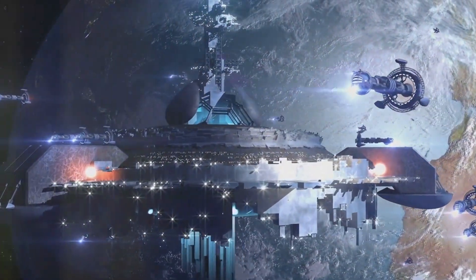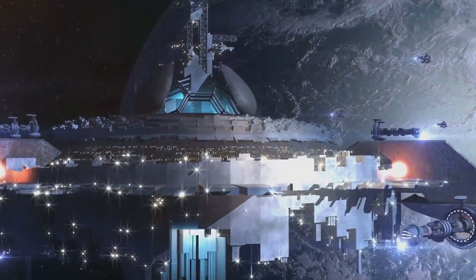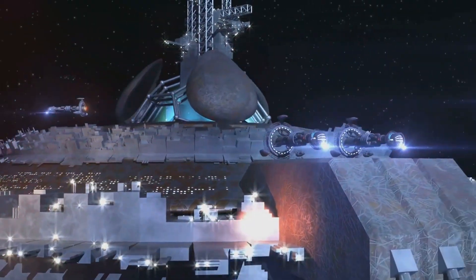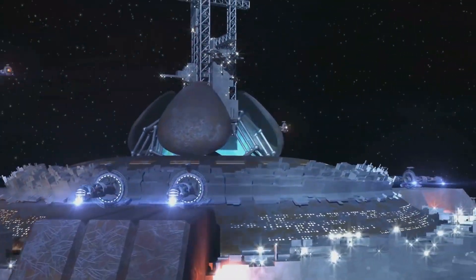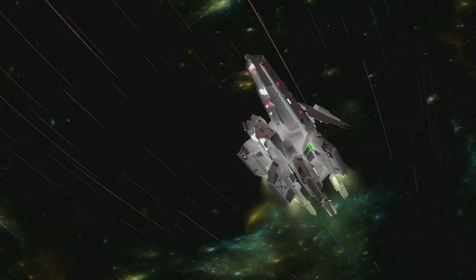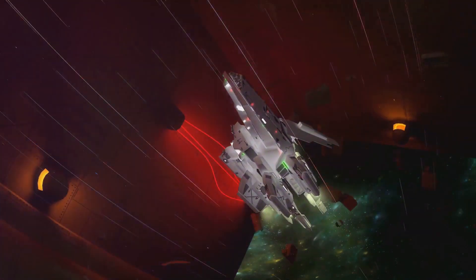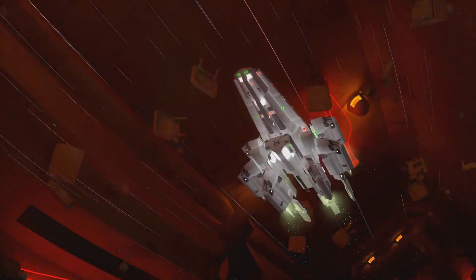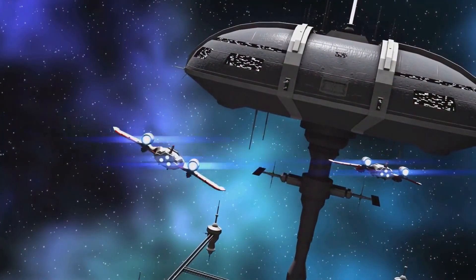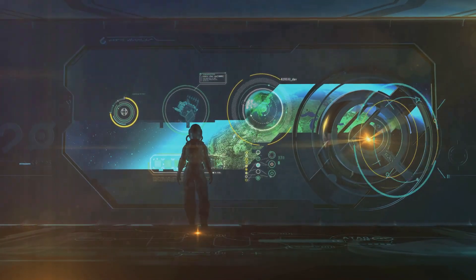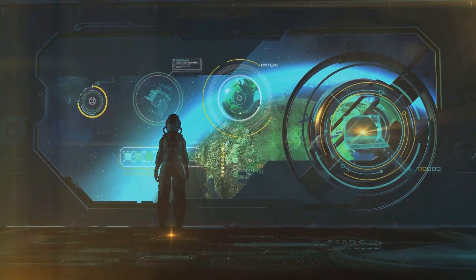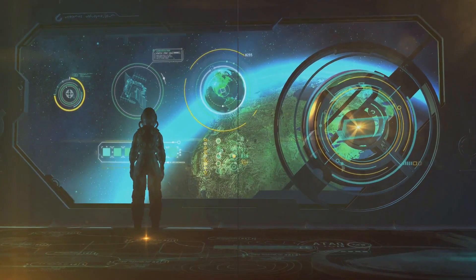One way to quantify such advancement is through the Kardashev Scale, a theoretical framework that categorizes civilizations based on their capacity to harness and utilize energy. This scale, however, only extends to Type 3. But what if we dared to imagine beyond, to a level far exceeding our current understanding? A hypothetical civilization so advanced it can control the very essence of the universe itself, a Type 9 civilization. Now let's dive into the realm of the unimaginable and explore the concept of a Type 9 civilization.